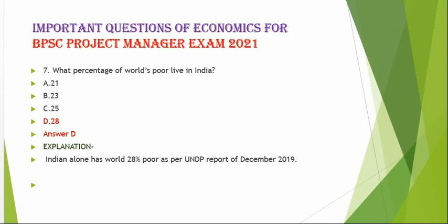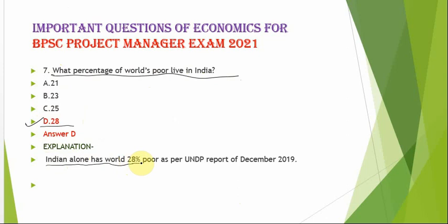The next question is: what percentage of the world's poor live in India? The correct option is option D — 28%. India alone accounts for 28% of the world's poor, as per the UNDP report of December 2019.